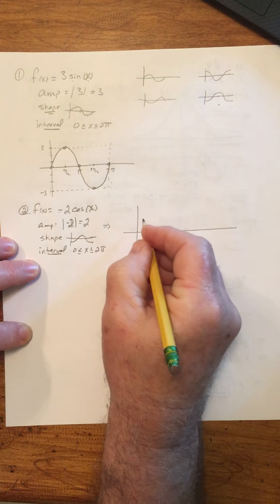The third one: we have f(x) = (1/2)sin(x). The amplitude in this case is absolute value of 1/2, which is 1/2. So instead of stretching vertically, this is going to actually be compressed vertically. The shape: we have a positive sine curve, so that should be in our comfort zone. Again, the standard interval. These are the three pieces of information you need to have for now to be able to draw the sketch. The interval is from 0 to 2π.